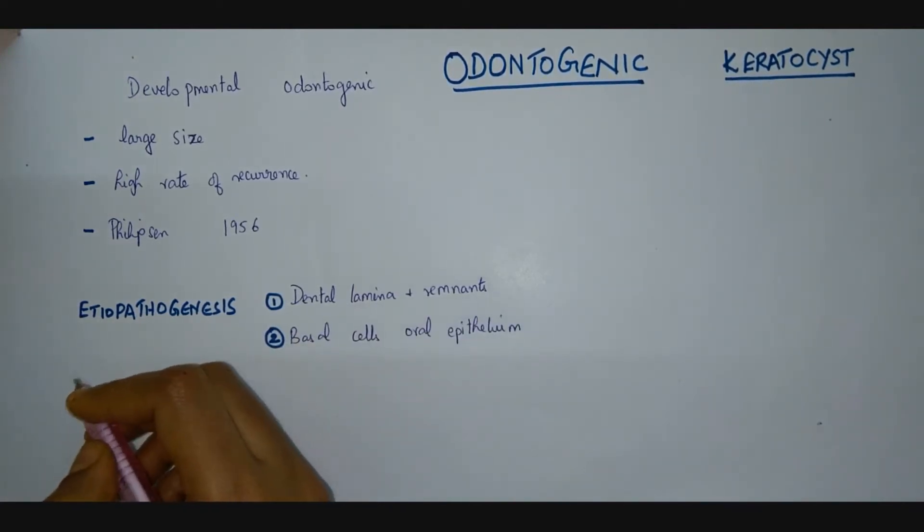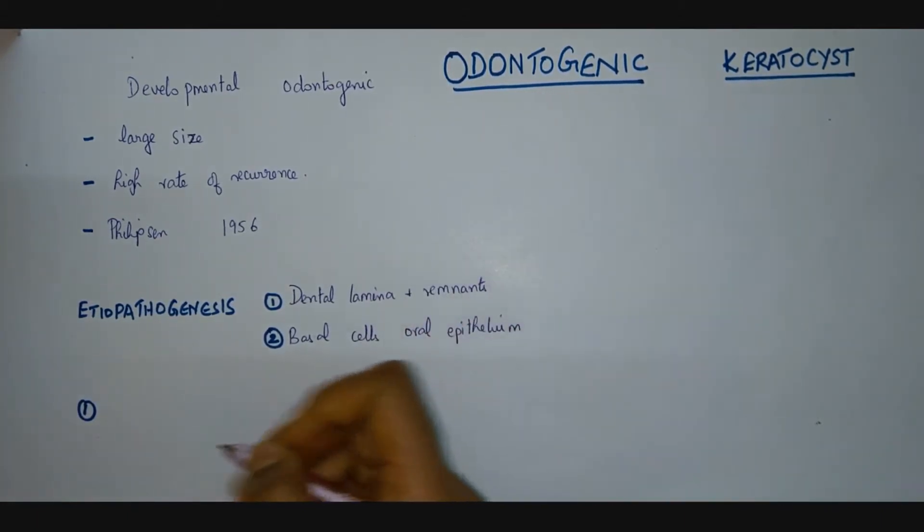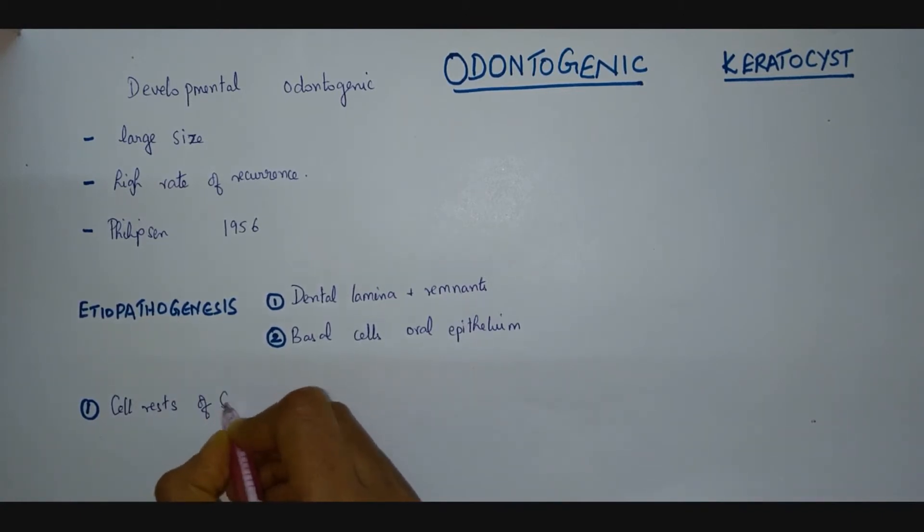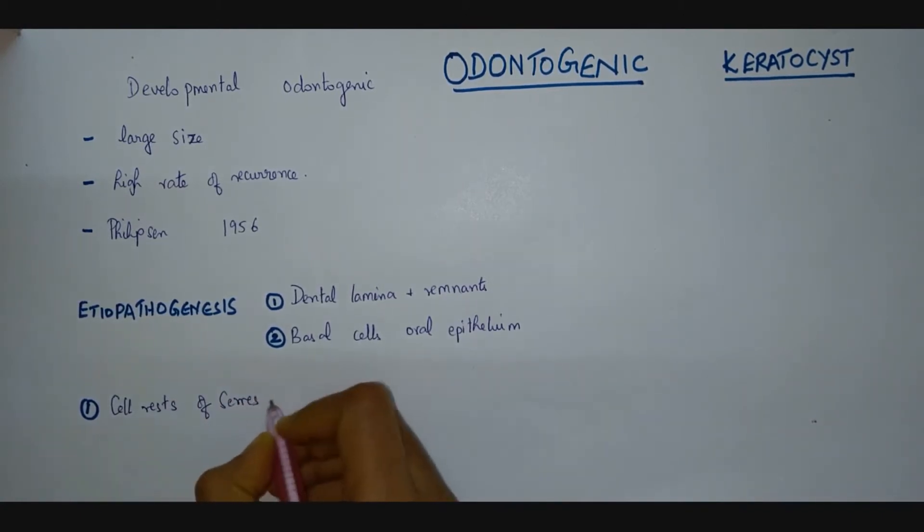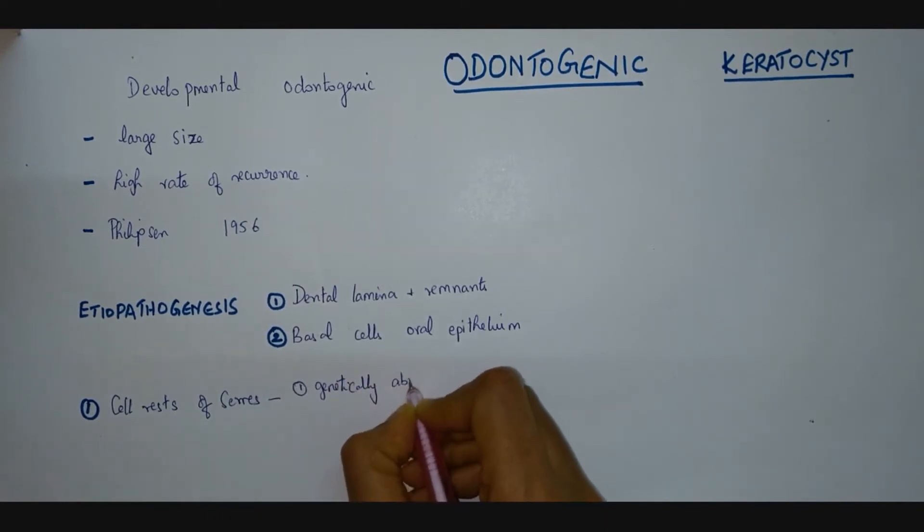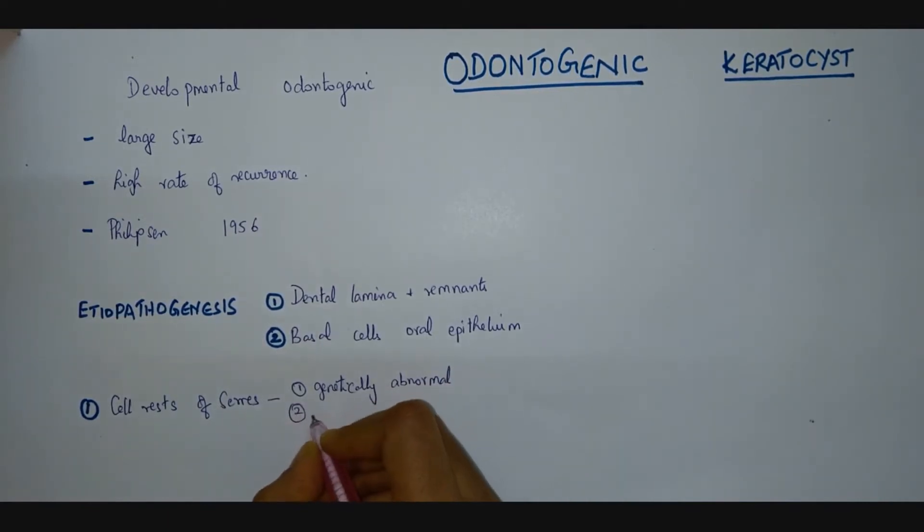First let us see about this dental lamina and the remnants. Recollecting, dental lamina after its participation in odontogenesis will remain as remnants called as cell rest of Serres. So when these cell rests are genetically abnormal and also when they have an exuberant proliferating capacity, they can give rise to this odontogenic keratocyst.